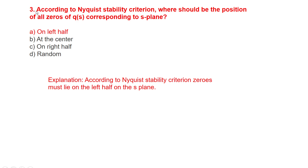The next question: according to the Hurwitz stability criteria, where should be the position of all zeros corresponding to the S-plane? The position should be on the left half. According to the Hurwitz stability criteria, zeros must lie on the left half of the S-plane. For a system to be stable, the poles and zeros should lie on the left half of the S-plane.